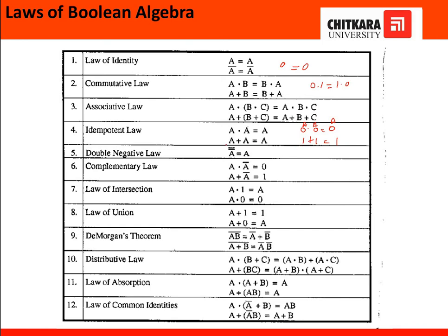Next is the double negative law, which says that a double-complement equals a — the two bars cancel each other. For example, taking 0 double-bar: first, 0-bar is 1, then 1-bar is 0. So the answer is the same. We can directly cancel the two bars when encountered in an expression.